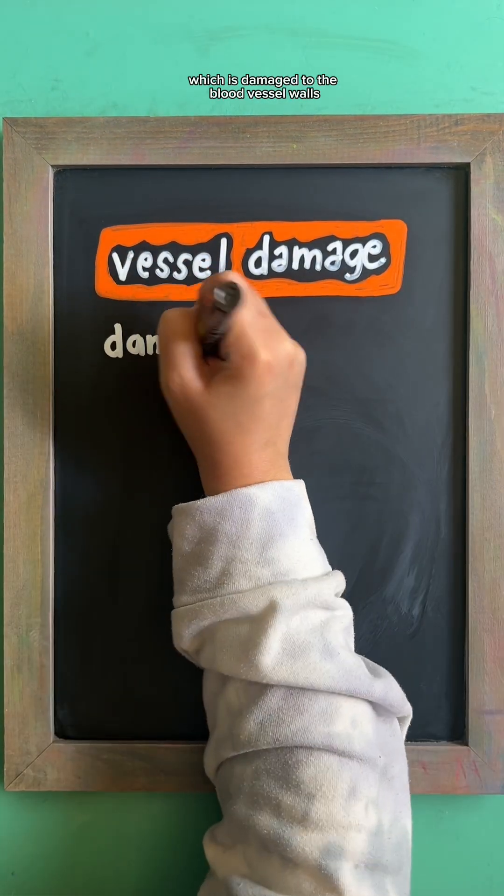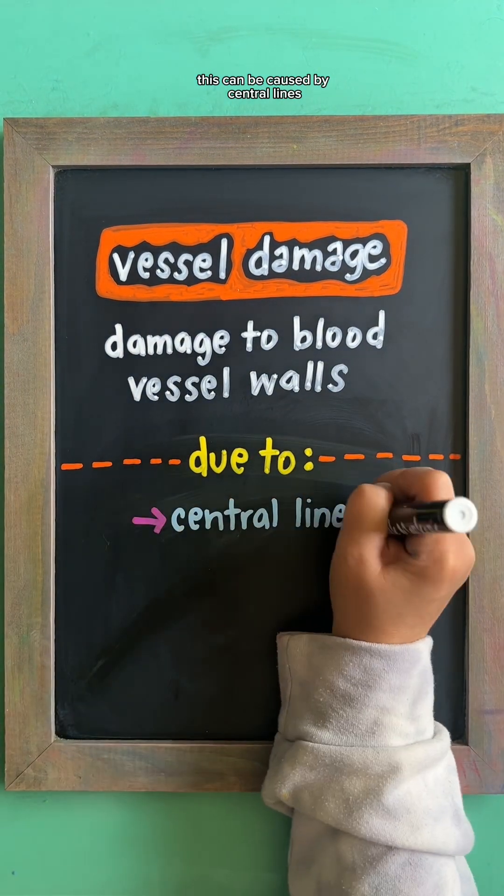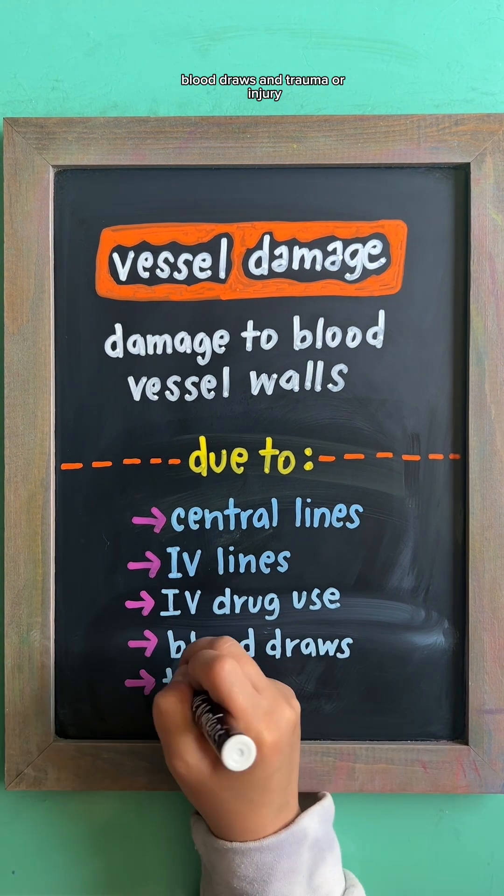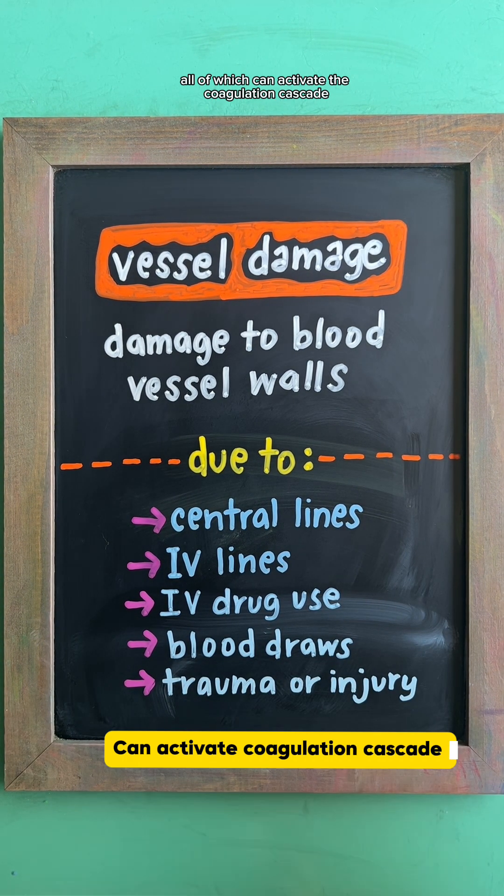And lastly, vessel damage, which is damage to the blood vessel walls. This can be caused by central lines, IV lines, IV drug use, blood draws, and trauma or injury, all of which can activate the coagulation cascade.